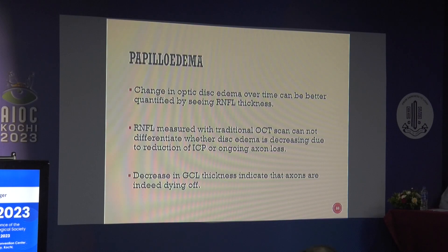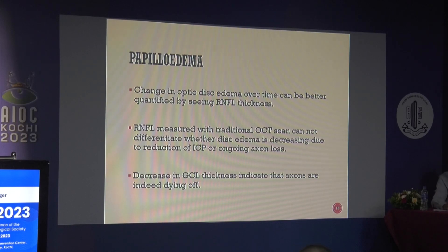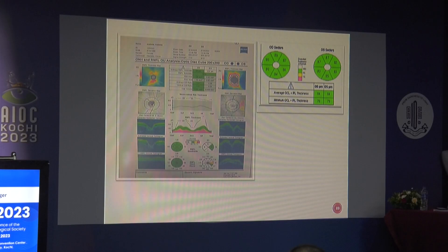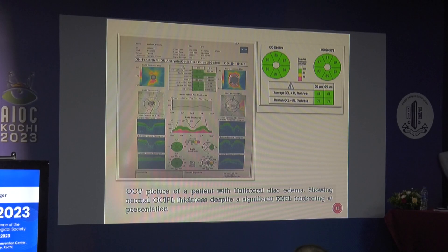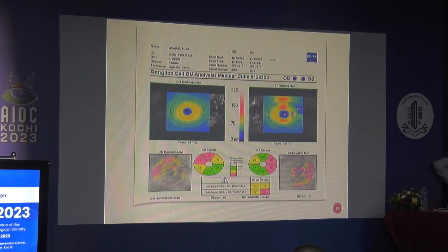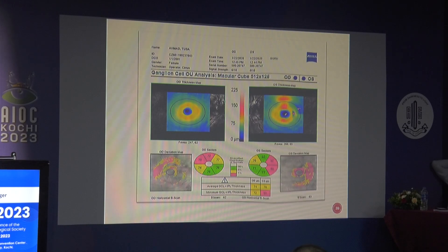Papilledema is definitely a very good application of OCT. Changes in optic disc edema over time can be better quantified, which is important when explaining objective values to neurology specialists. RNFL with traditional OCT cannot differentiate whether disc edema is decreasing due to reduction in ICP or due to axonal loss. Here the GCL is helpful — if it shows thinning, it indicates axons are indeed dying. An OCT picture of a patient with unilateral disc edema showing normal GCL-IPL thickness allows you to explain a better prognosis, whereas if GCL is already thinned, prognosis can be explained accordingly.